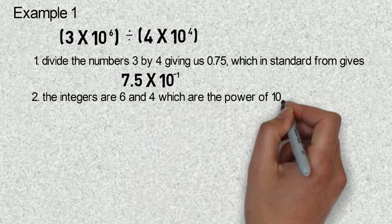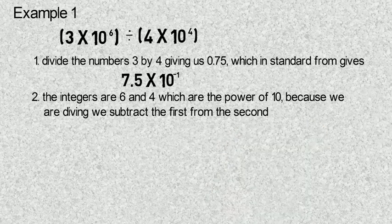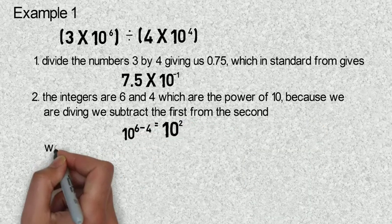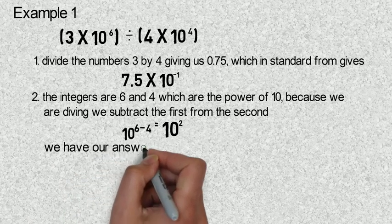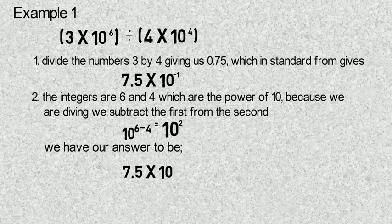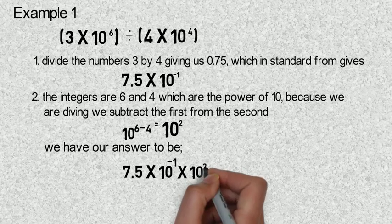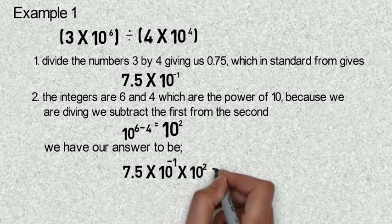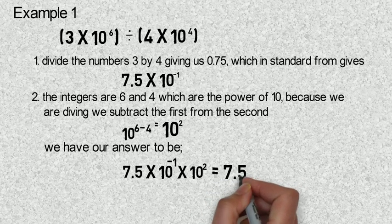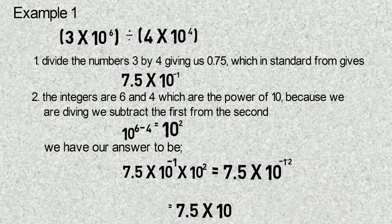Then, solving for the integers six and four, we do our subtraction according to the rule. So, six minus four gives two. Since our division has also produced a new integer — ten raised to power minus one — we combine them together, giving seven point five times ten raised to power minus one, times ten raised to power two, which equals seven point five times ten raised to power one.